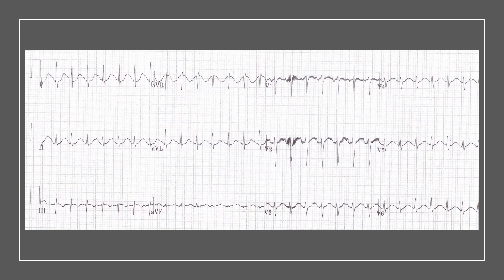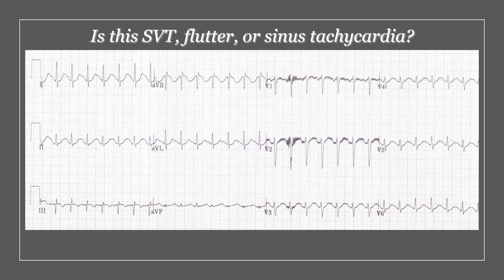Let's put this into practice. If you're faced with this ECG, what you're going to see is a narrow complex regular tachycardia. The differential diagnosis for something like this is one of three major things: first is SVT, second is atrial flutter, and third is sinus tachycardia.